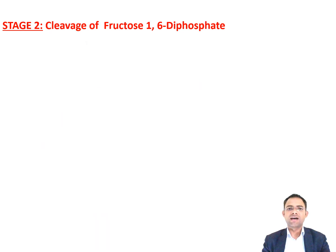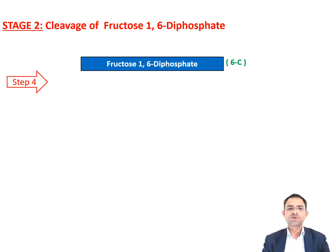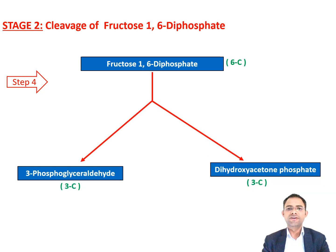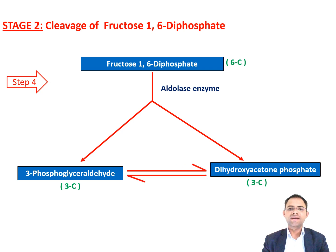In the second stage of the glycolysis pathway, the cleavage of fructose 1,6-diphosphate takes place into 3-phosphoglyceraldehyde and dihydroxyacetone phosphate. In the fourth step, fructose 1,6-diphosphate, which is a 6-carbon compound, splits into the 3-carbon compounds 3-phosphoglyceraldehyde and dihydroxyacetone phosphate with the help of the enzyme aldolase. These both compounds are called triose phosphates and are inter-converted into each other in the presence of enzyme phosphotriose isomerase so that balance is maintained. In further reactions, two molecules of three carbons will be involved.